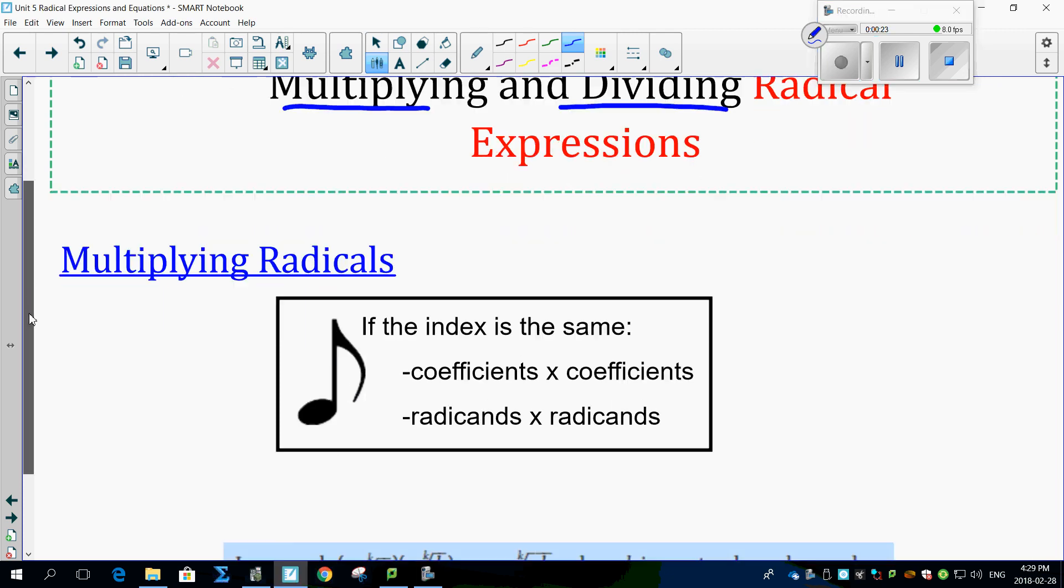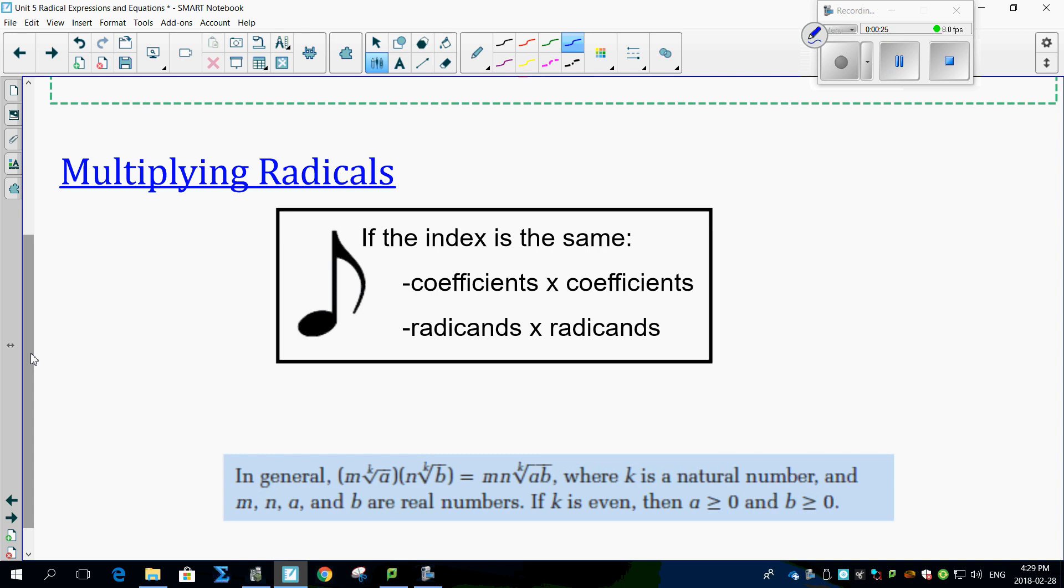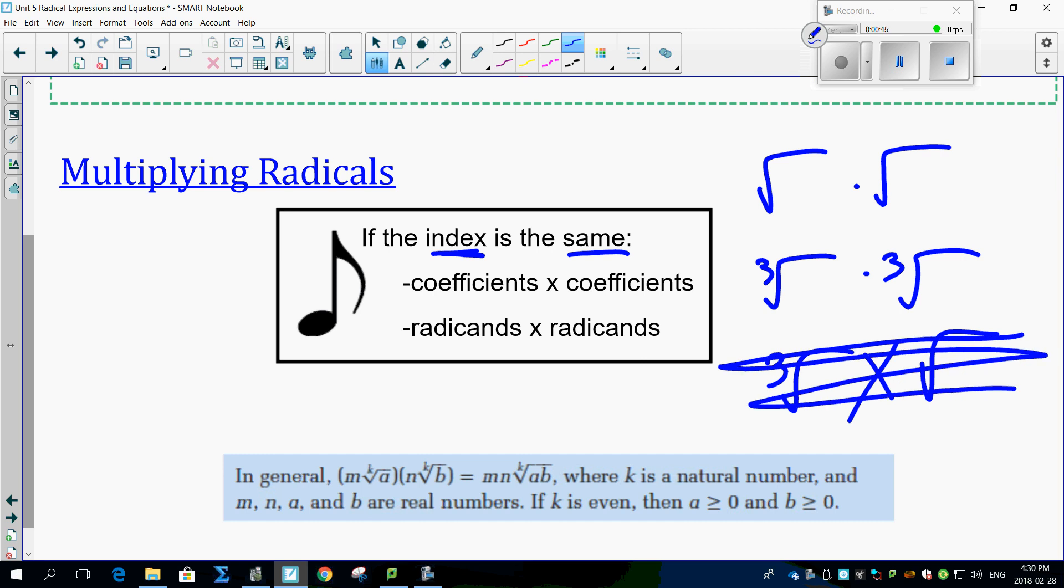Oh man, how does that work? Well, it works actually quite easy. If the index is the same, that's the key. So you're going to multiply a square root by a square root, or a cubed root by another cubed root. But you will not do a cubed root times a square root. That's just not going to happen.